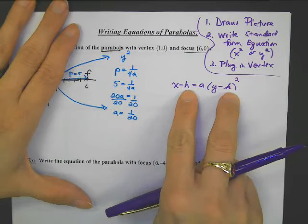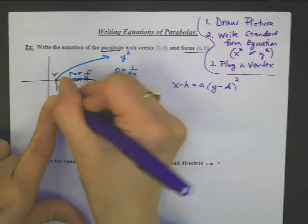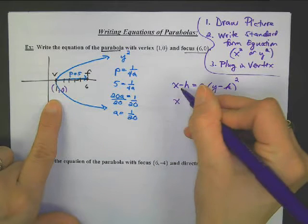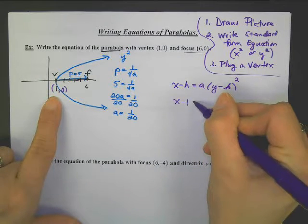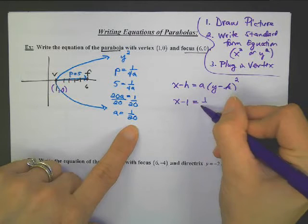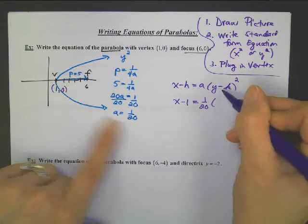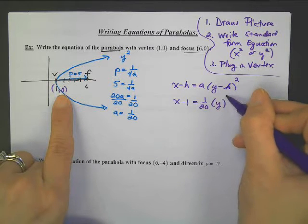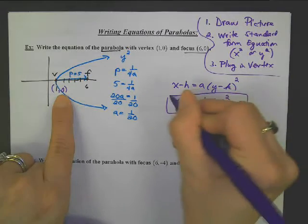So it's x minus h equals a times (y minus k) squared. Do we know the vertex? Yes, the vertex is (1, 0), so it's going to be x minus 1. Did we calculate a? Yes, we got 1/20. And then the y minus 0 is just y squared. That's how you do parabolas.